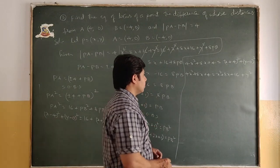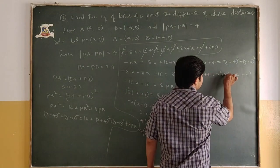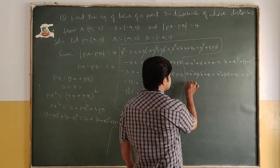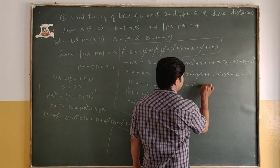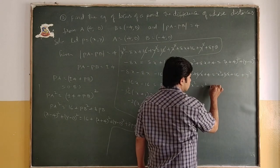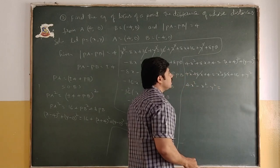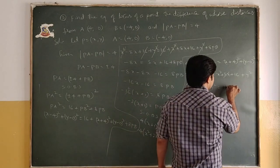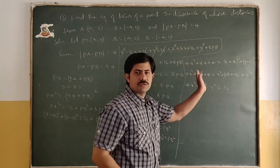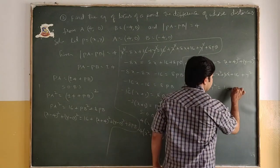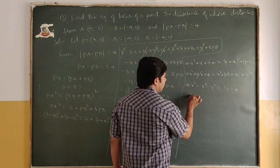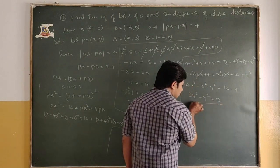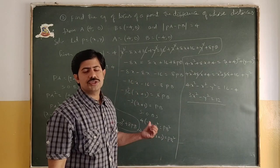Regrouping: 4x² - x² - y² = 16 - 4, so 3x² - y² = 12. This is the required equation of locus.